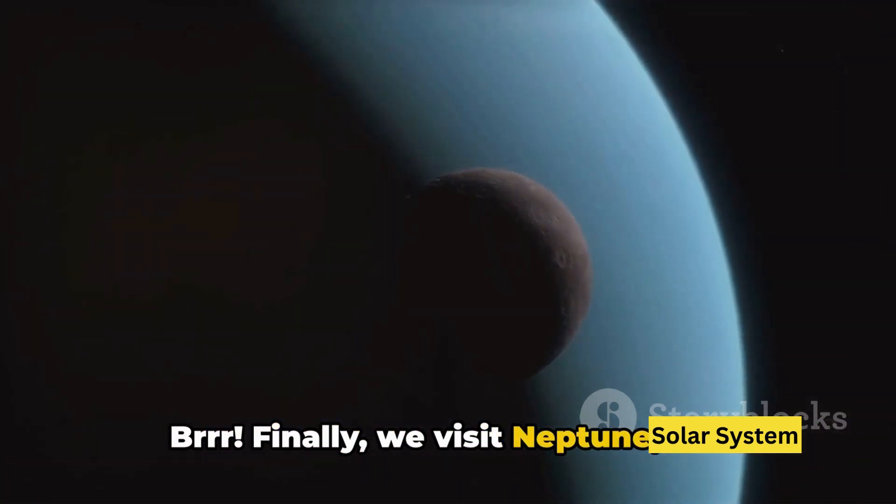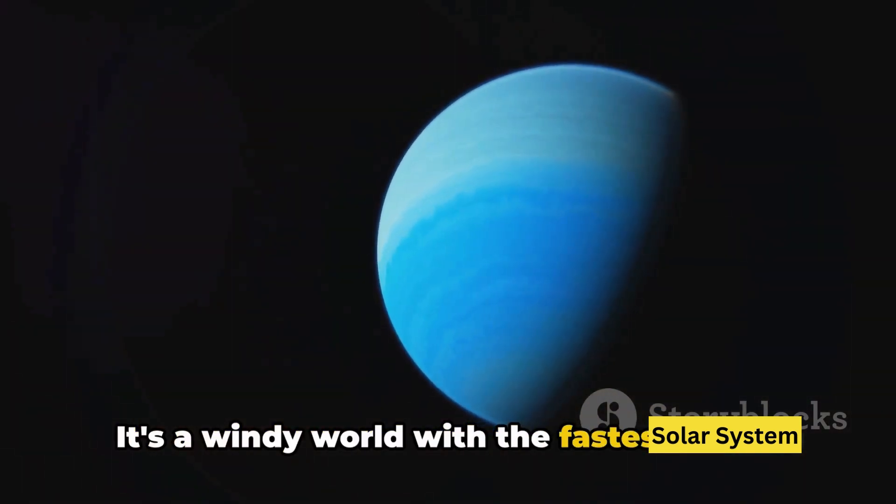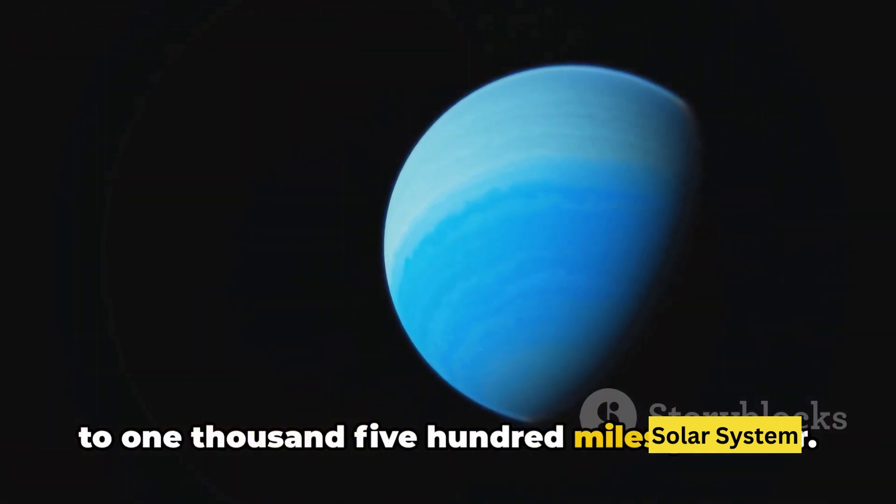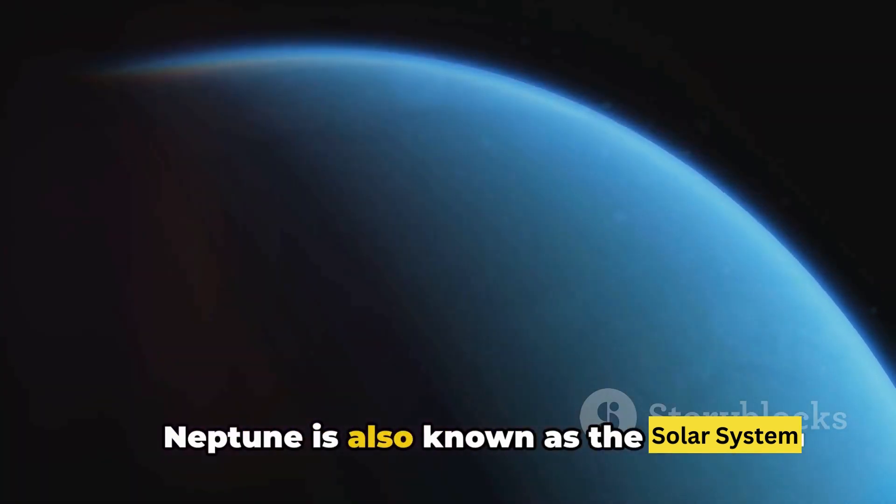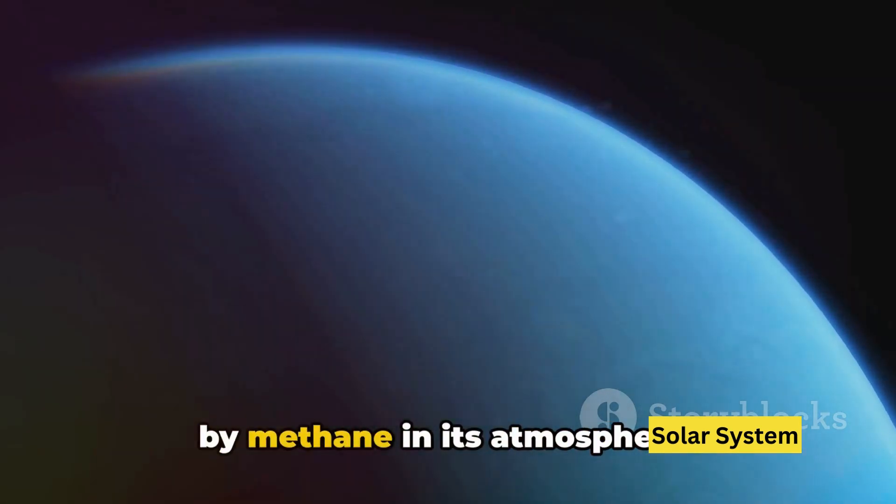Finally we visit Neptune, the farthest planet from the Sun. It's a windy world with the fastest winds in the solar system, reaching speeds of up to 1,500 miles per hour. Neptune is also known as the blue planet due to its deep blue color, caused by methane in its atmosphere.